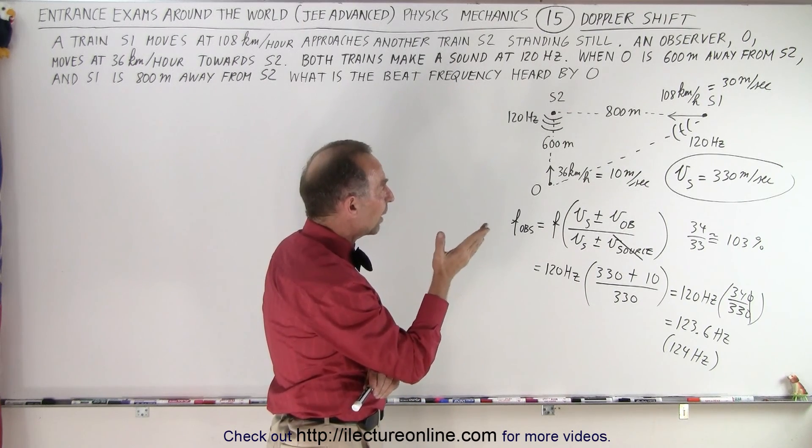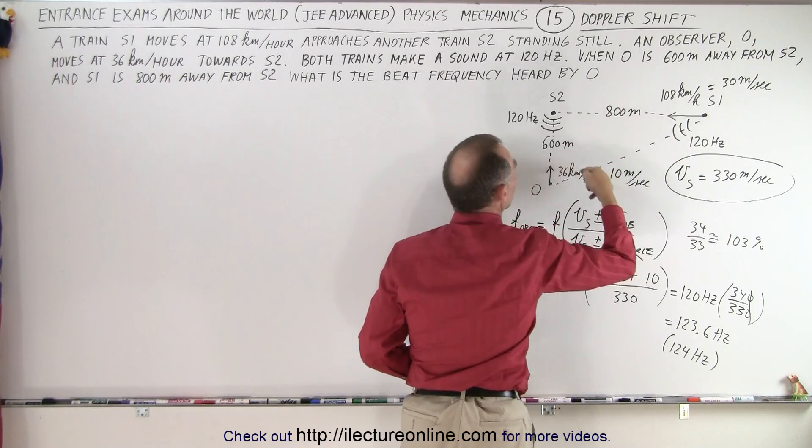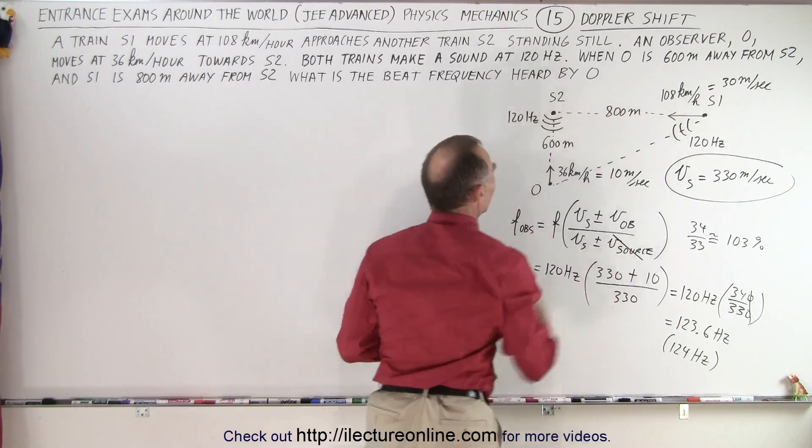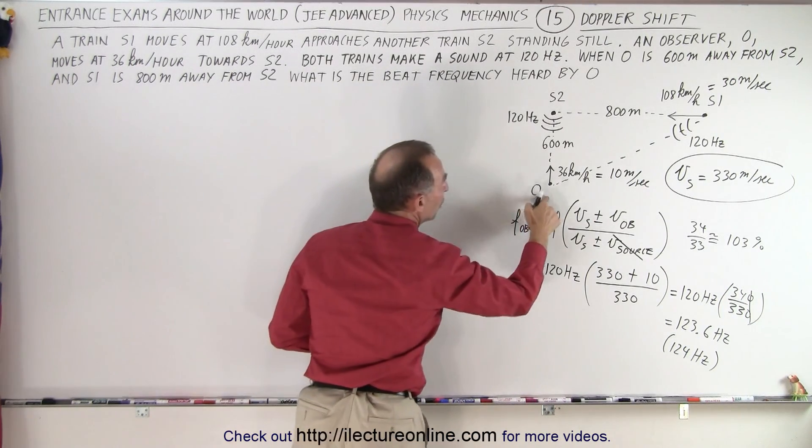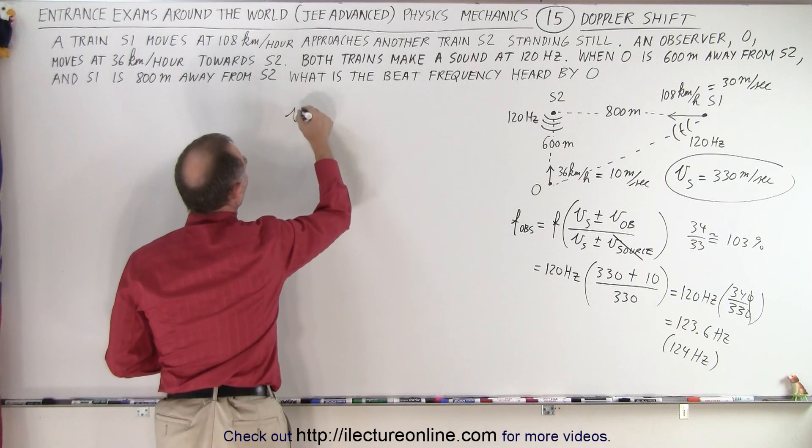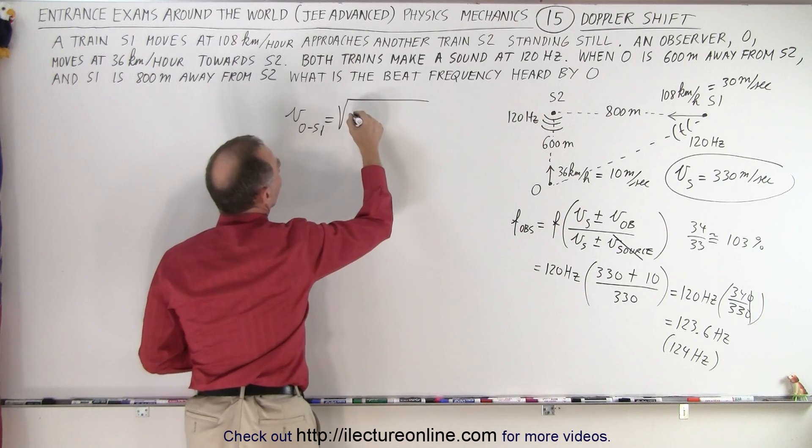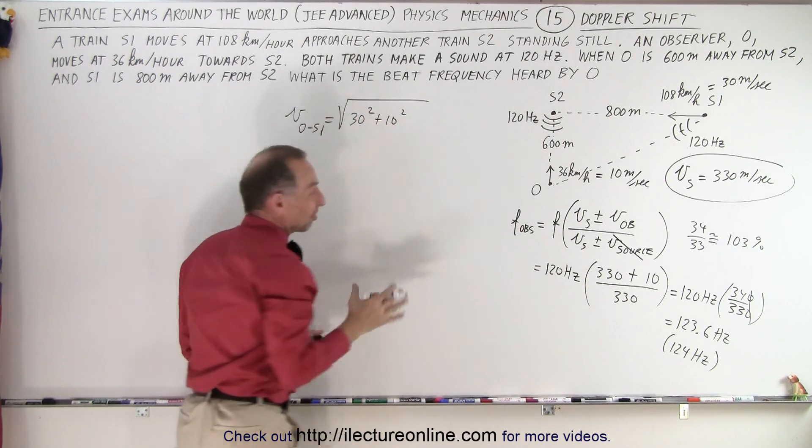We can also think of it this way. The closing velocity between these two would be the square root of the square of the closing velocity here and the closing velocity there. So what I'm going to do is that the closing velocity between O and S1, so the velocity between O and S1, is equal to the square root of 30 squared plus 10 squared, essentially.